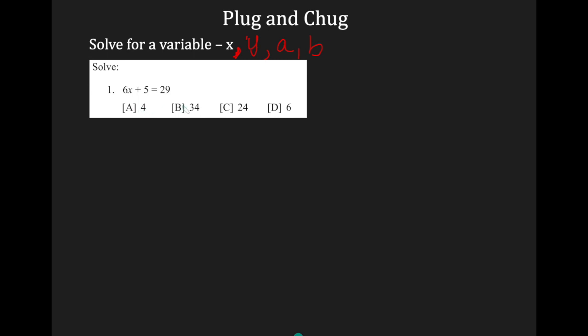It could be 4, 34, 24, or 6. So I'm going to plug in each of these, looking for when the left and the right equate to each other. So the first step is I'm going to write my equation, which is 6x plus 5 equals 29. I'm going to start with my first choice of A, which is 4. So wherever I see x, I'm going to replace it with 4.